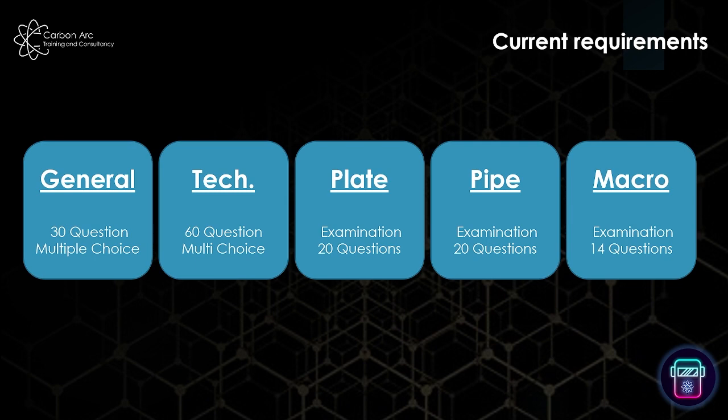We have a plate which we have to inspect — that's a plastic sample — root and face, make a report, and fill in 20 multiple choices. Then we have the same for a pipe, and then we have two macro sections to look at. Right now these are all multiple choice paper questions, and since about October last year it's been moving over to being completed electronically, either at a computer in a T2Y test center or on an iPad.